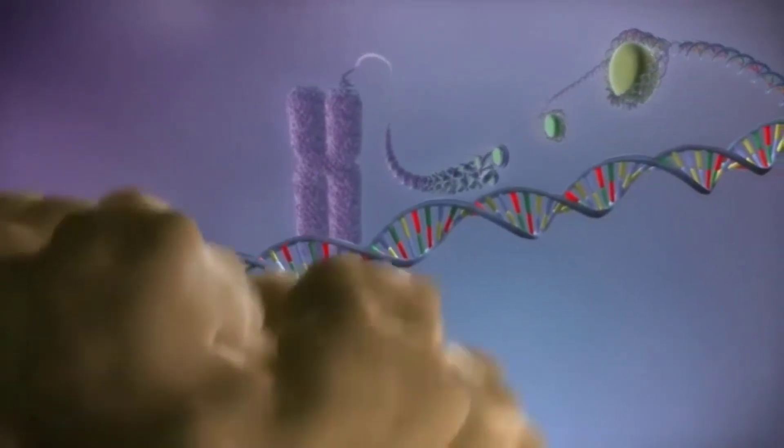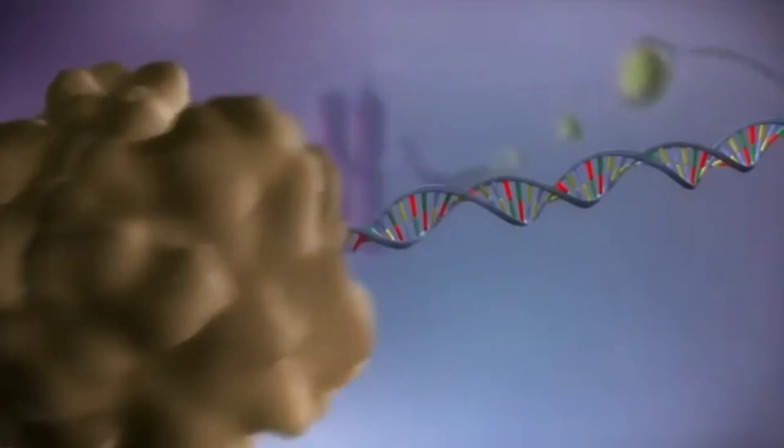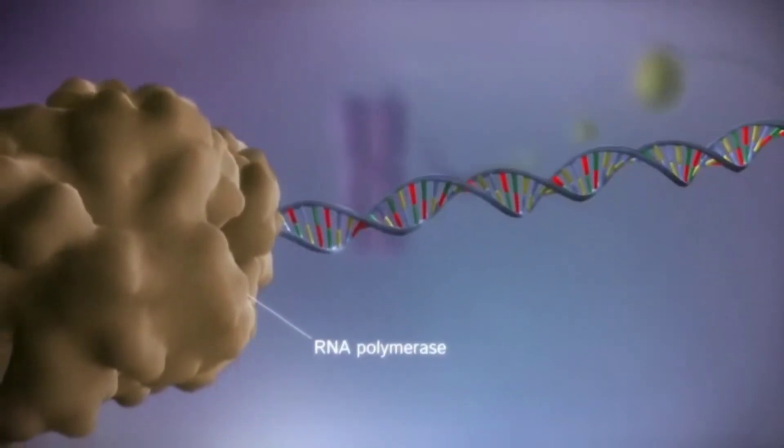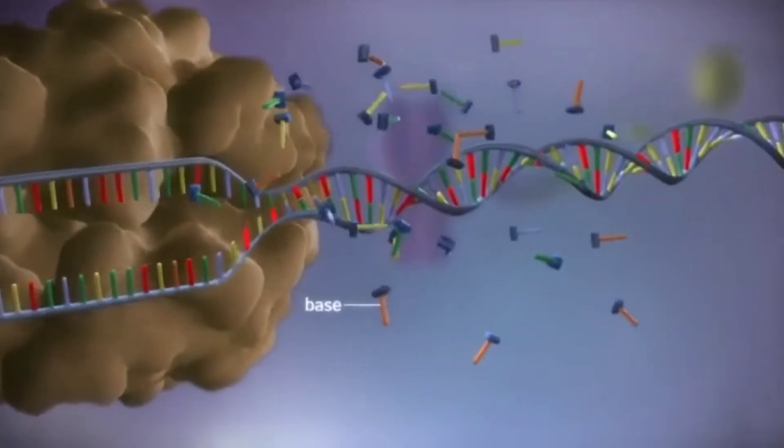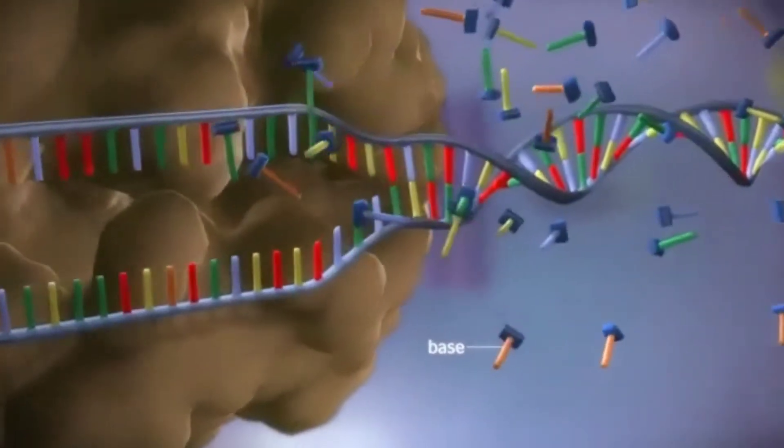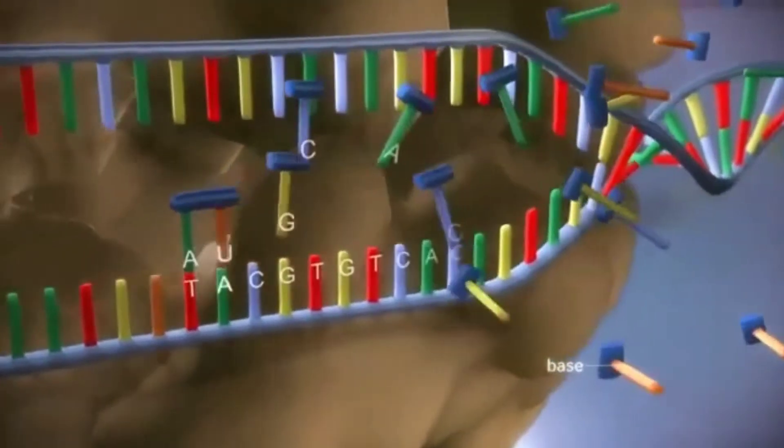When a gene is switched on, an enzyme called RNA polymerase attaches to the start of the gene. It moves along the DNA, making a strand of messenger RNA out of free bases in the nucleus.